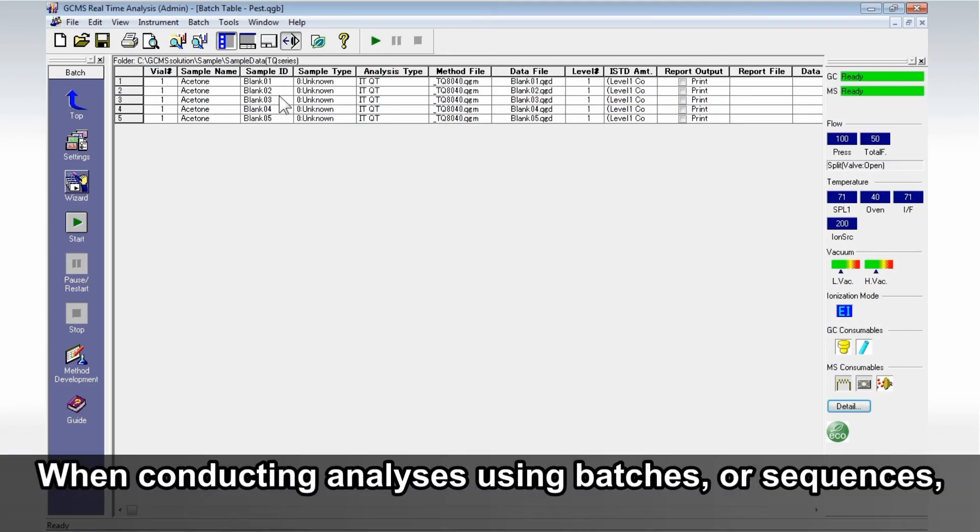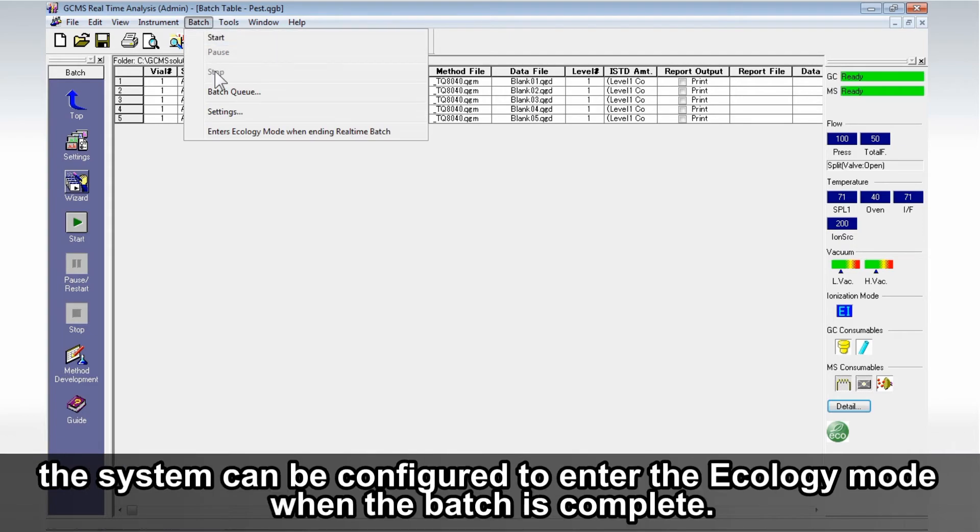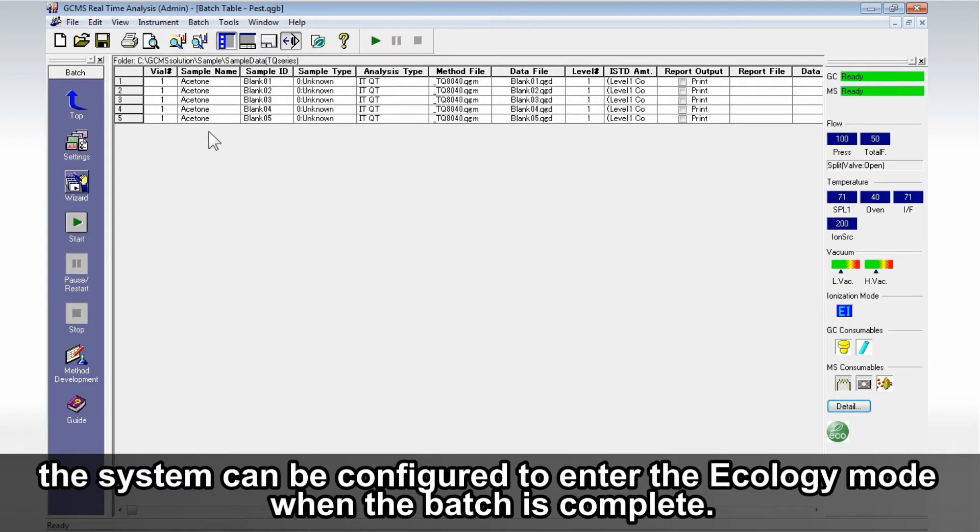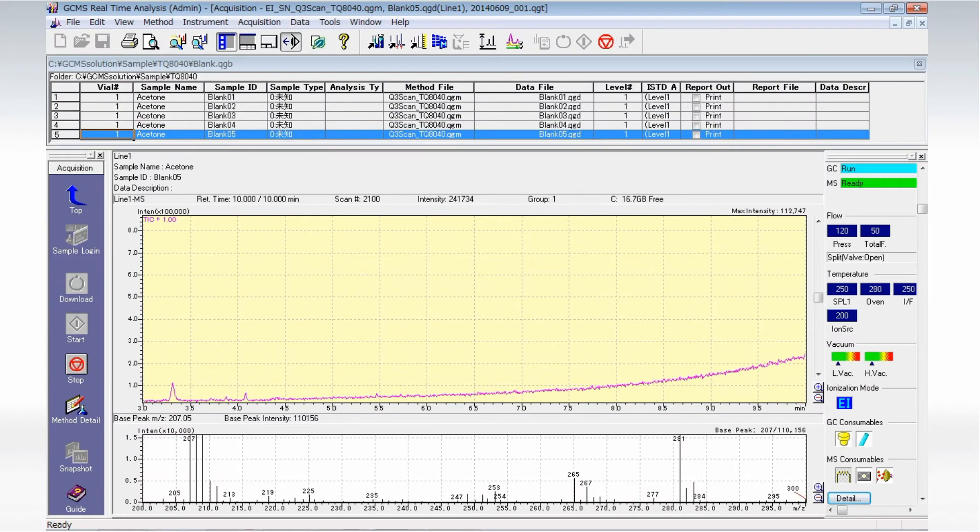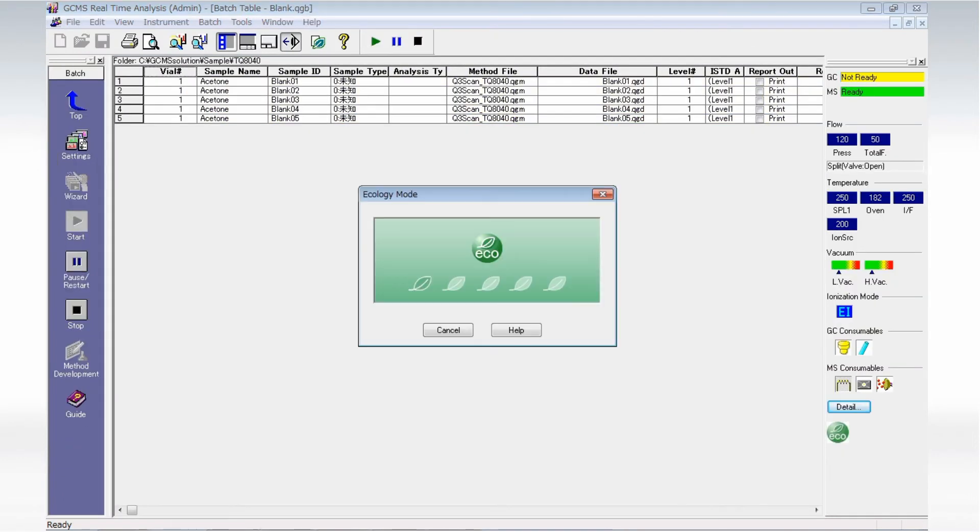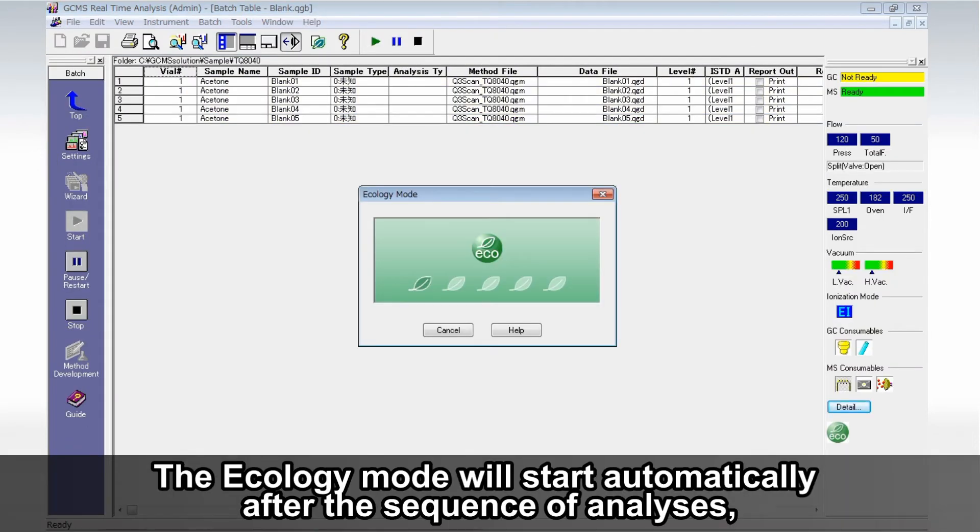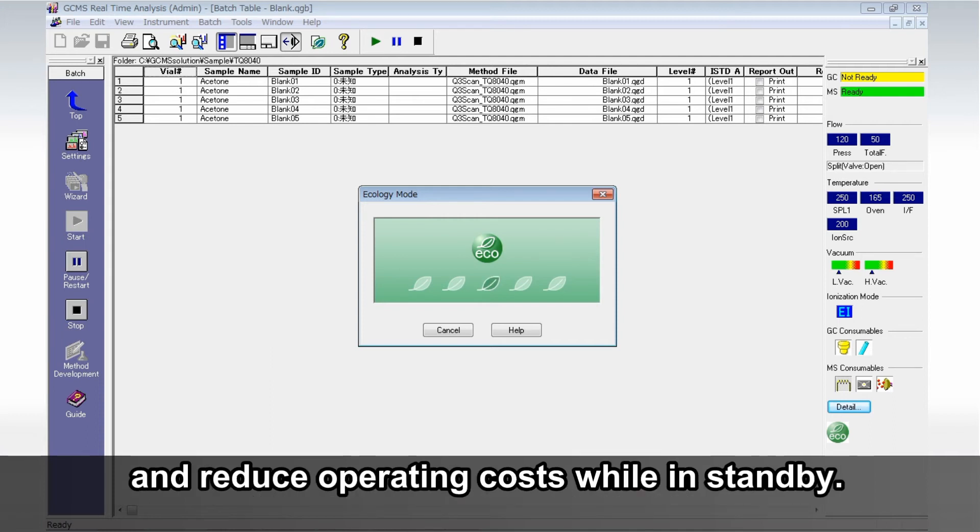When conducting analyses using batches or sequences, the system can be configured to enter the Ecology Mode when the batch is complete. The Ecology Mode will start automatically after the sequence of analyses and reduce operating costs while in standby.